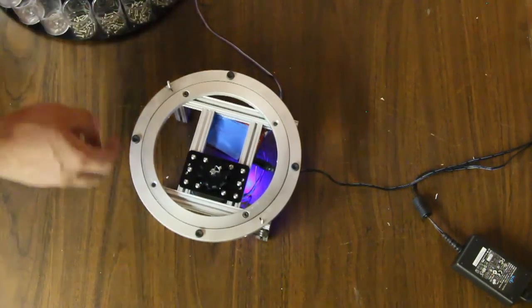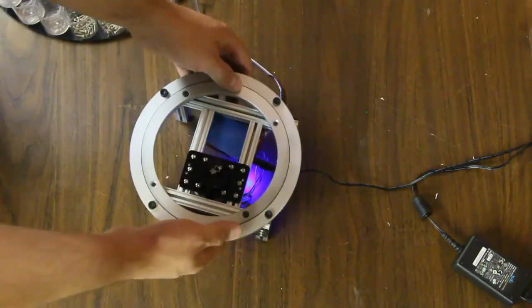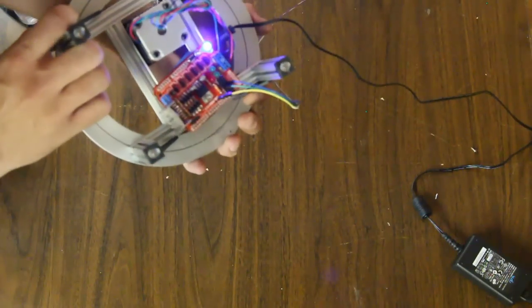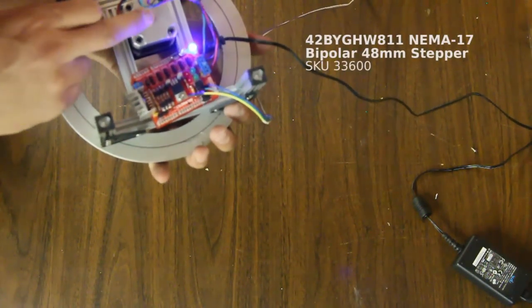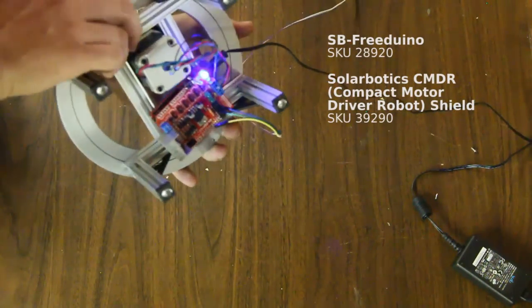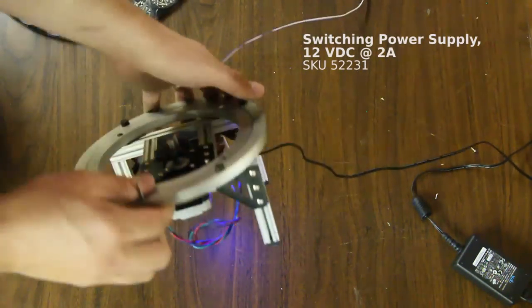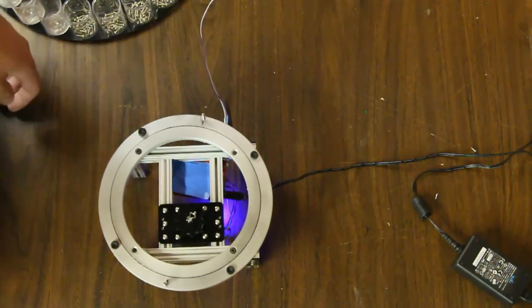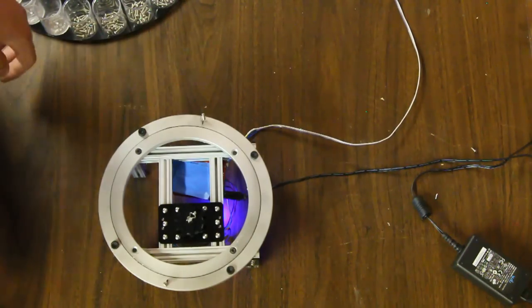Down here we have our lazy susan type bearing and then we got our open beam set up and that's using our open beam to mount our stepper and an Arduino with a commander shield on here. And then lastly we have this wired portion that goes to the vibratory bowl feeder and that takes commands from that Arduino on that side to advance the carousel.